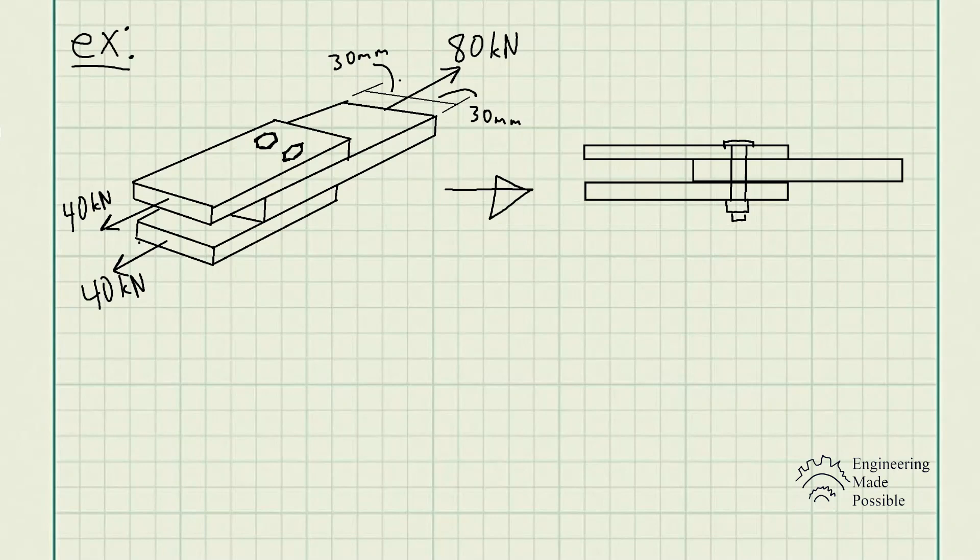For this problem statement, we have a joint fastened together using two bolts. Determine the required diameter of the bolts if the failure shear stress for the bolts is 350 megapascals. Use a factor of safety for shear of 2.5. Here is my drawing.